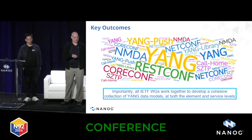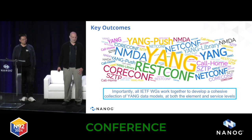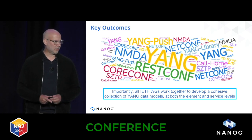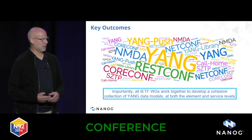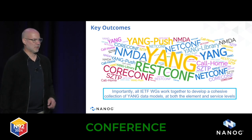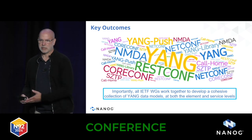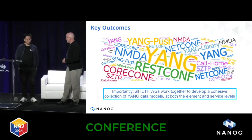That workshop occurred 20 years ago, and its outcomes were tremendous. Many technologies were developed — you'll recognize these from the word cloud: YANG, RESTCONF, NetConf, NMDA (Network Management Data Store Architecture), Call Home, SZTP (Secure Zero Touch Provisioning), and YANG Library — all fundamental to how we manage networks today. Also importantly, IETF working groups have been working together with operators to develop a cohesive collection of YANG data models at both the element level — configuring routers, switches, and firewalls — and the service level, used inside controllers and orchestrators.